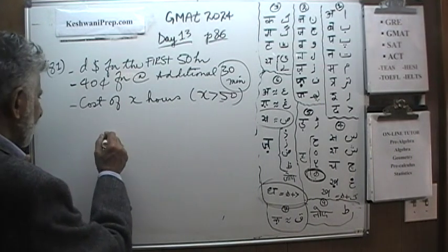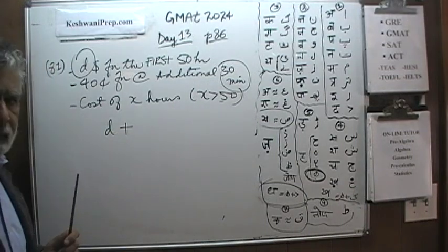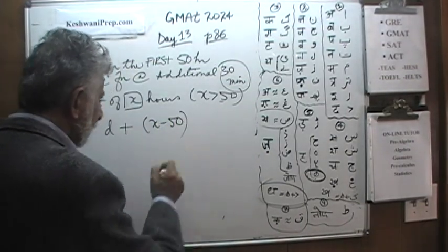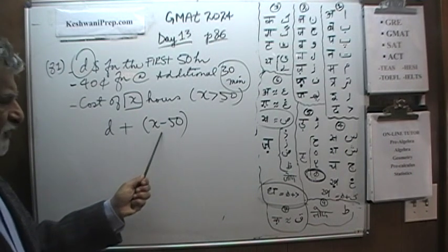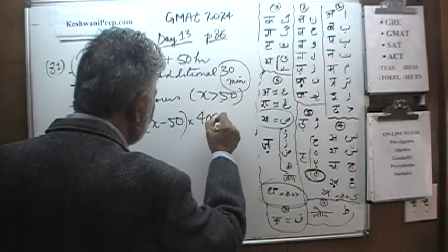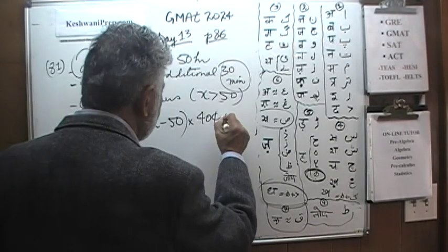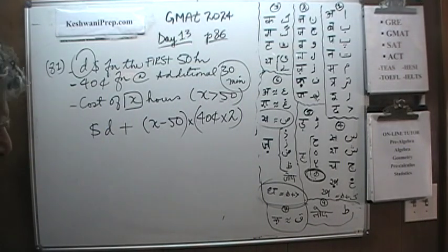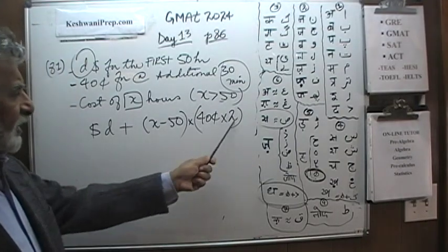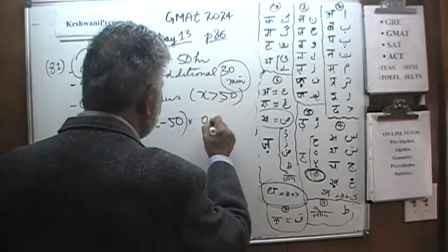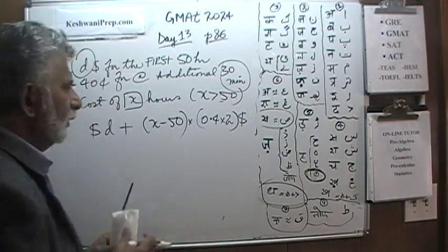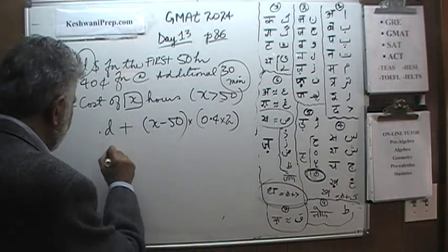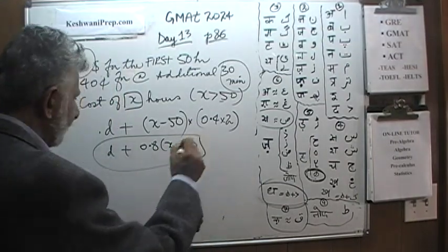For the first 50 hours we're going to pay D dollars. Then anything above 50 - we're using X hours and X is more than 50 - so X minus 50 for the additional hours. We have to pay 40 cents each half hour, therefore for each hour we have to do 40 cents times 2. The problem is this is in dollars and this is in cents. We have to convert: instead of 40 cents times 2, write it as 0.4 times 2 dollars. That's our answer: D + 0.8(X - 50).